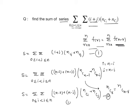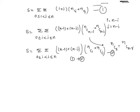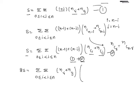Call the original expression equation one and the transformed expression equation two. Adding equations one and two: 2S equals sigma sigma, 0 ≤ i < j ≤ n, of nCi·nCj times [(i+j) + (n-i+n-j)]. Taking nCi·nCj common, inside the bracket we have i+j + n-i+n-j, so i and j cancel.